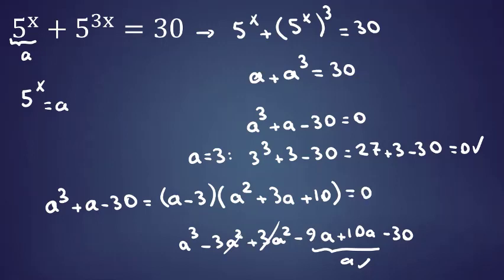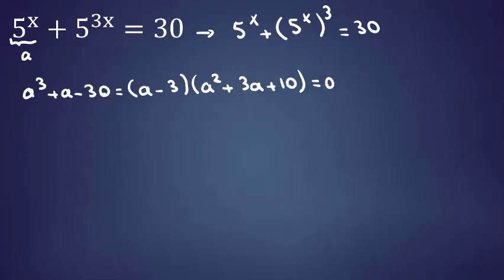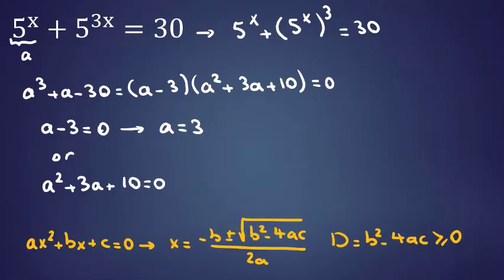We conclude the first term is 0, so a minus 3 equals 0, or the next part, a squared plus 3a plus 10 equals 0. For the first one, a equals 3. For the next part, we use the quadratic formula in terms of a.